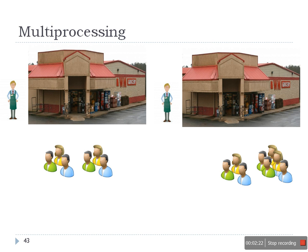By default, every process has only one thread. Take the example of a C program — every instruction is executed in sequence, one by one: first, second, third. It's not possible to execute multiple instructions at the same time when there is only one thread of control, one thread of execution. Same scenario here: this person in the grocery store can do only one task at a time.